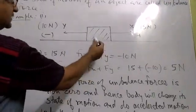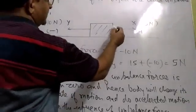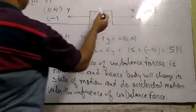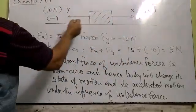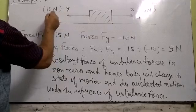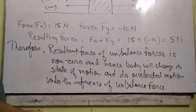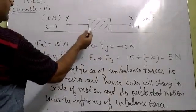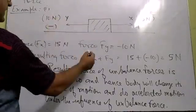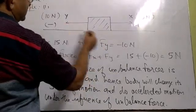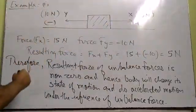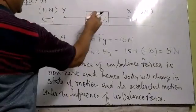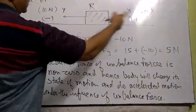An object is placed on the table. Suppose person X is applying 15 newton force, pulling with 15 newton force in one side. Person Y is pulling with 10 newton in the opposite direction. It means force applied by X is 15 newton. Force applied by person Y, which is Fy, is minus 10 newton because of opposite direction.